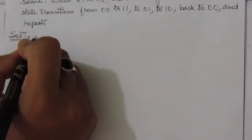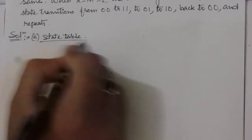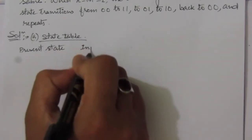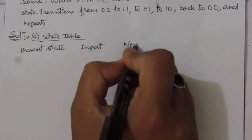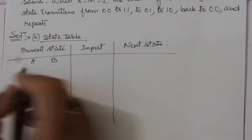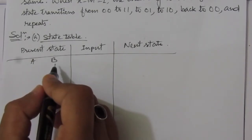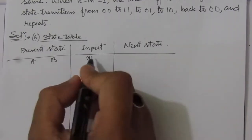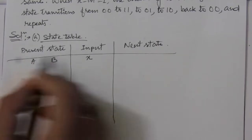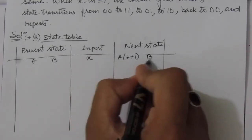First we make the state table. We will have present state columns A and B — the present state outputs of flip-flop A and flip-flop B — and the input X (X_in, assumed X for simplicity). For this present state and input, we find out the next state, denoted A(t+1) and B(t+1). With two flip-flops, we have eight combinations in the state table.